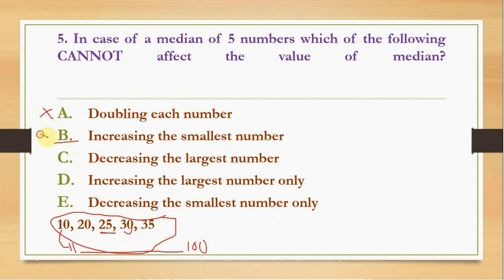Decreasing the largest number, again the same case. If you decrease 35 to 26 or 27, the value of median would remain same. However if you decrease 35 to less than 25, for example 21 or 10, the value of median will be changed. So this is also not our answer.